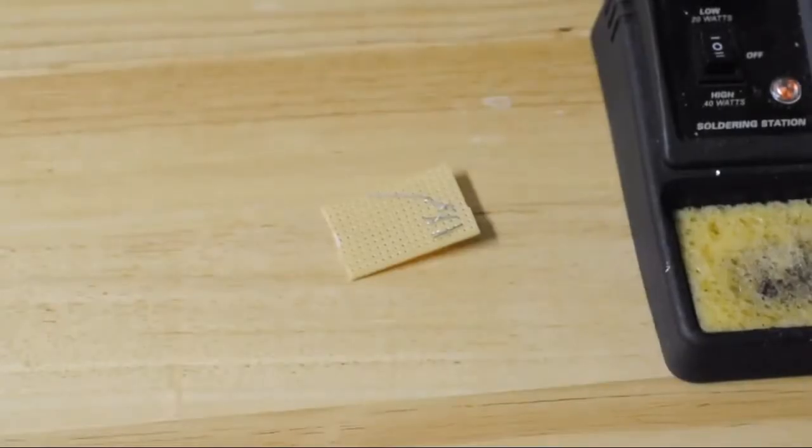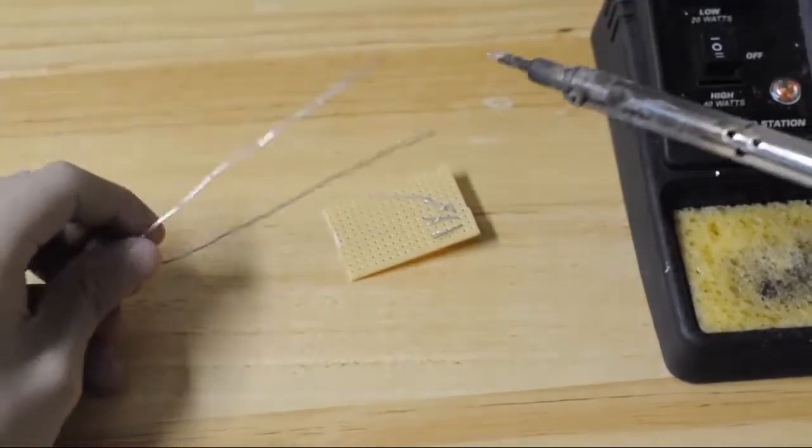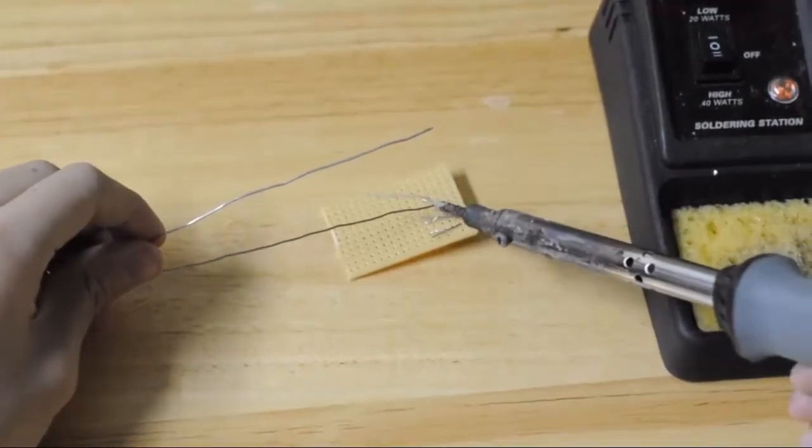Now we need to solder the legs of the resistor to the legs of the transistor. Take your soldering iron and take some solder and begin soldering the legs to each other.